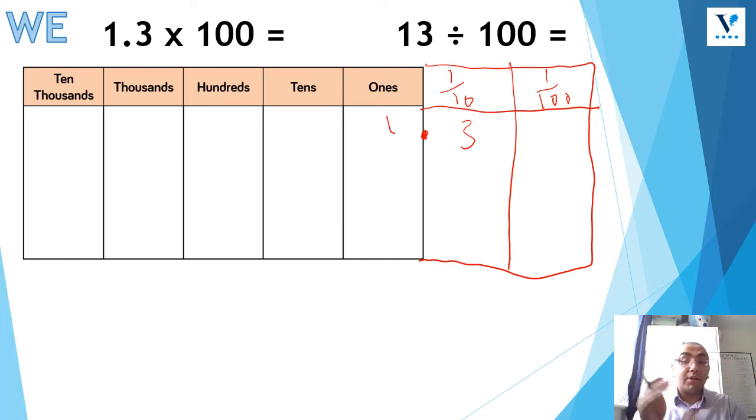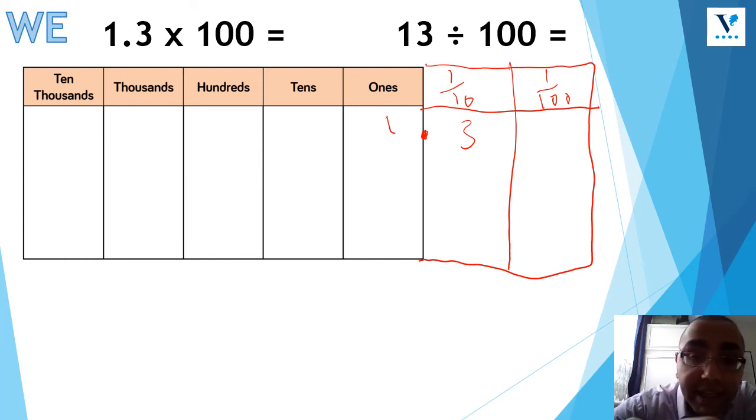So I'm just going to extend my place value grid a little bit. I'm now going to add the 10th and the 100th. So I've got my 0.3. Now I'm multiplying by 100. If I'm multiplying, is the number going to become bigger or smaller? Shout it out. Bigger, absolutely. And what direction am I going to move? Am I going to move to the right or to the left? Tell me louder, please. I'm actually moving them to the left. I'm just getting confused with the camera. But I'm moving them to the left.